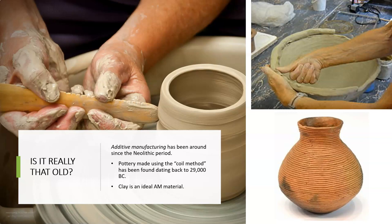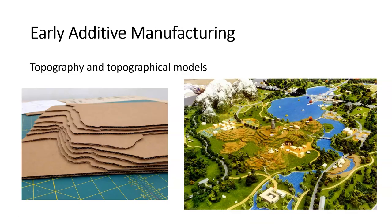So it actually is a really old — if not the oldest — method for making objects. When you think about it, clay is an ideal additive manufacturing material because it starts as a pliable substance that we can shape into the desired form. But then it can be fired or left to age, and it becomes harder over time. That's basically an ideal additive manufacturing material.